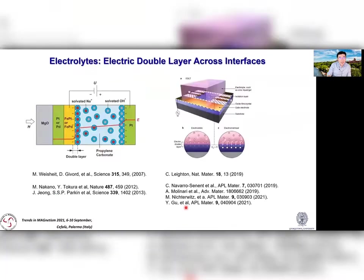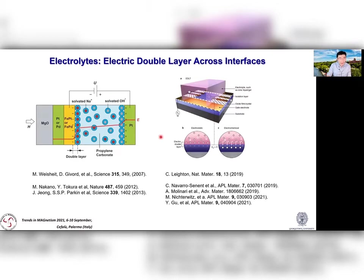Such memristors also found important applications in artificial neural networks. The magnetic version of this is best illustrated by the seminal work from Dominique Givard's group, where they've shown that using electrolyte and electric field, the charge accumulation on the exterior side of a material electrostatically induces charge buildup in the interior side, leading to a nanoscale electric double layer — essentially nanoscale parallel plate capacitors — which modifies material properties. This electrostatic effect is nicely illustrated in a review article by Chris Layton.